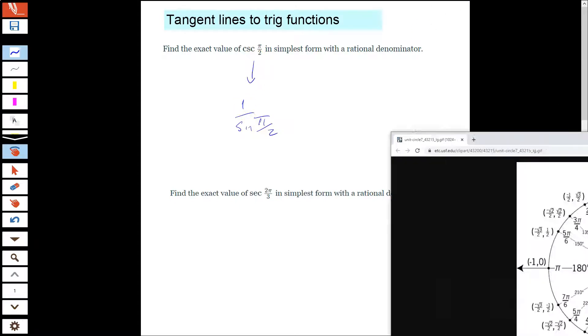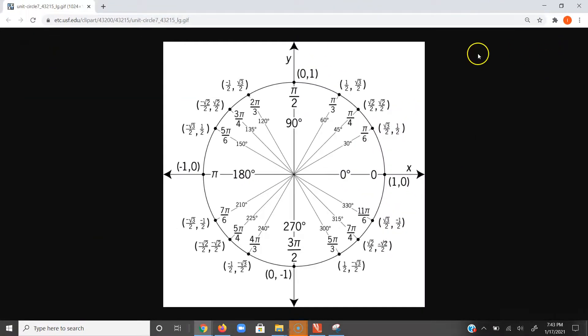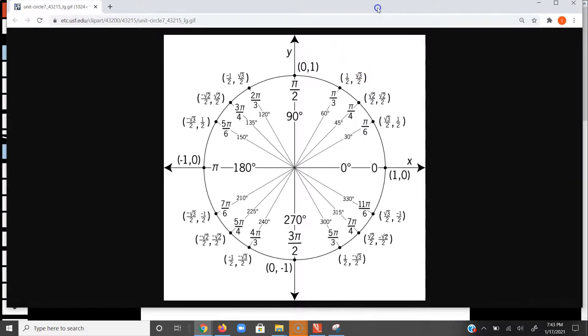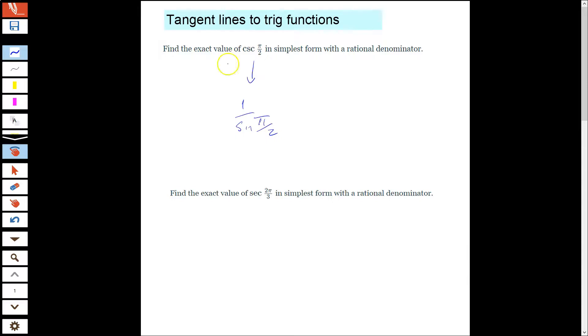On my unit circle, sine is the y on the unit circle. So cosecant has to do with this 1 at π over 2. Essentially, cosecant of π over 2 is 1 over 1. So we could say this is over 1 equals 1. So easy enough, right?